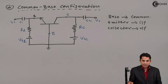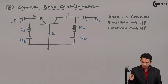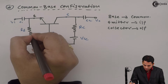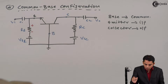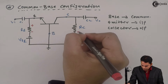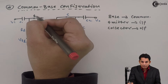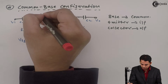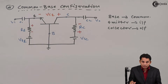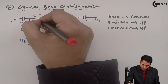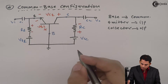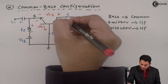Now let's mark the different voltages between the three junctions. We will also mark the direction of current for resistors. Voltage between collector to emitter is called VCE, voltage between base to emitter is called VBE, and voltage between collector to base is called VCB.